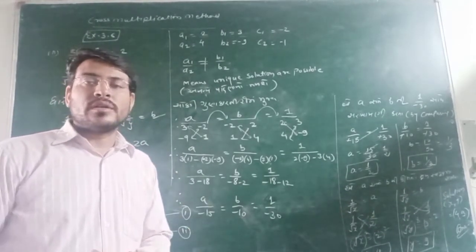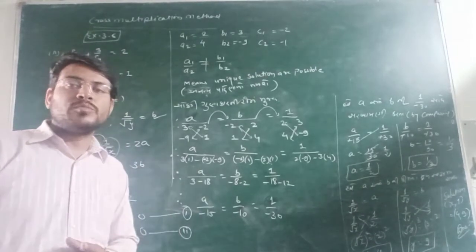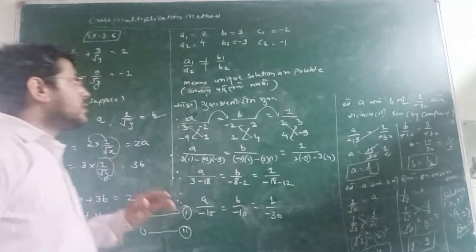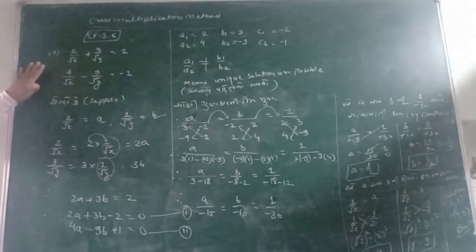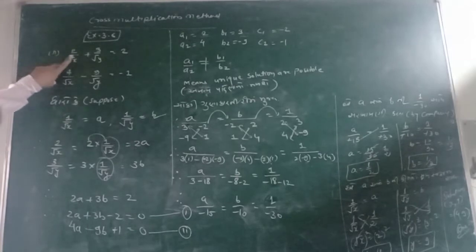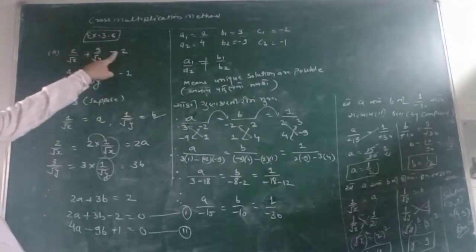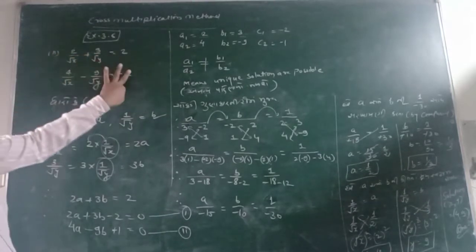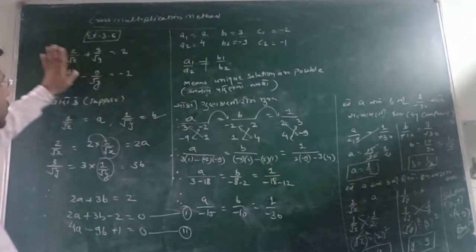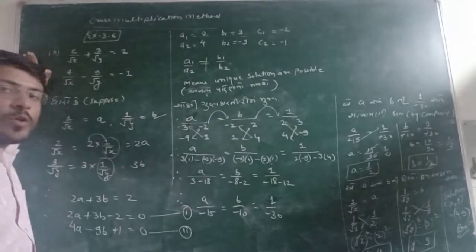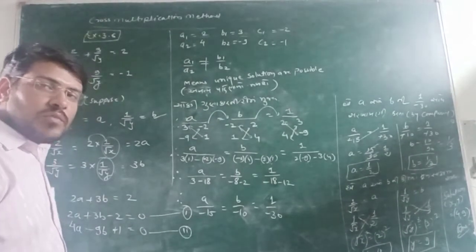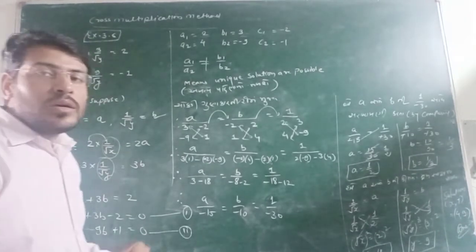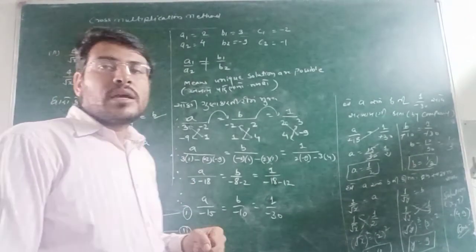here is a question where we have to assume certain variables. For example, you can see the second question that I am taking over here: 2 upon root x plus 3 upon root y is equal to 2. 4 upon root x minus 9 upon root y is equal to minus 1. Friends, as we all know that there should not be x or y variables or any variable in the denominator side. So, first of all, we should have to make the equations.